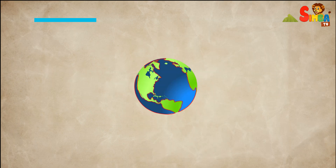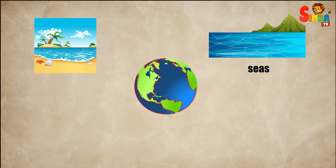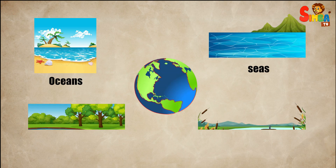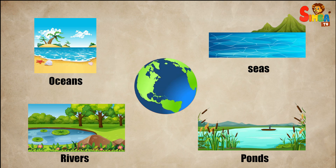Water: oceans, seas, rivers, lakes, and ponds make up a huge part of the earth's surface. Water is essential for all living things and shapes the land by eroding rocks and forming valleys and other landforms.